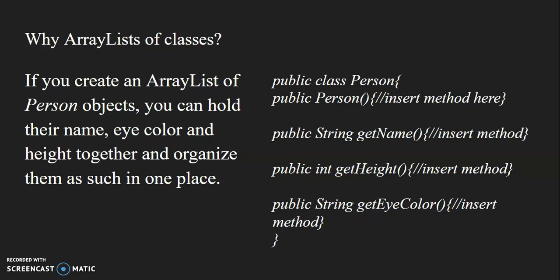Imagine that, say, you were the state and you were trying to keep track of information about everybody who had a driver's license. Well, maybe having a class called person with a constructor name, a height, and an eye color value would be a way to help you organize information about people's driver's licenses together. So you can cross list their name with their height and their eye color.